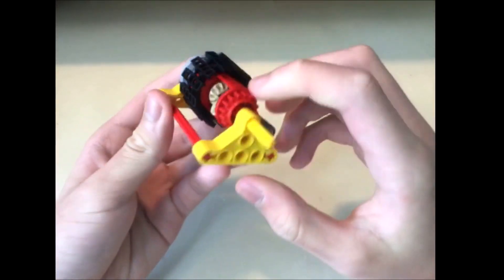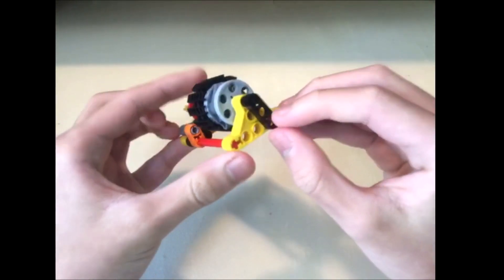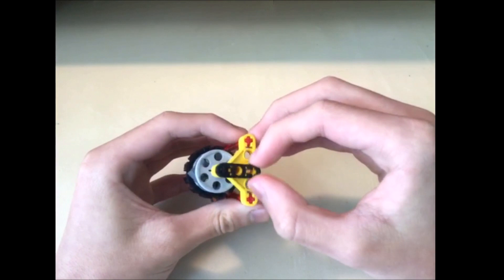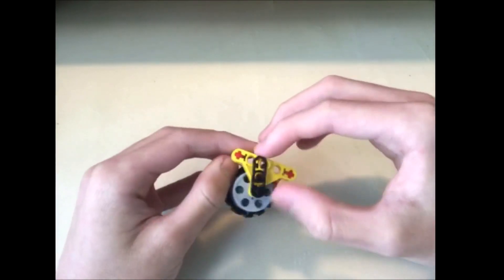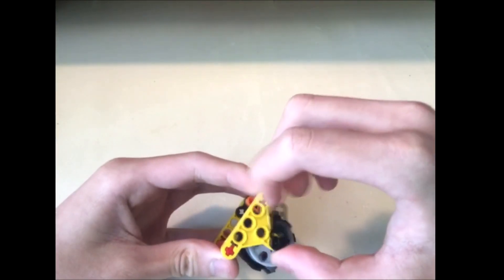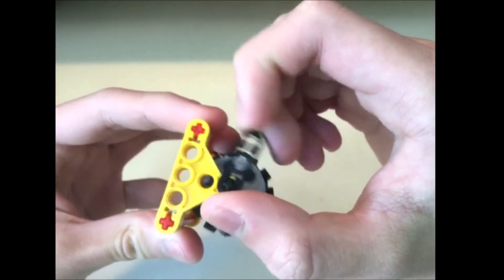But also, there's one more con about this mechanism. It's the backlash, or you can call it gear slipping. When I was playing with it, I found out that it actually has a lot of backlash. You see here, I can just turn the output axle backwards.